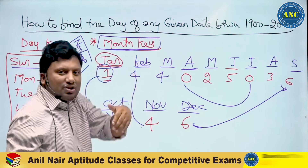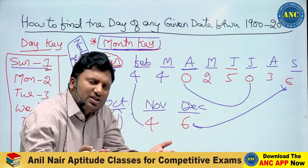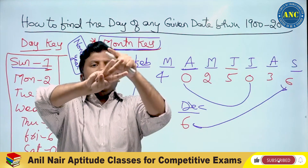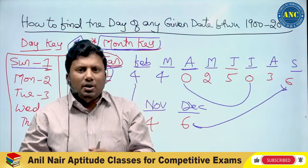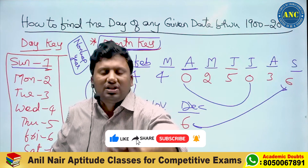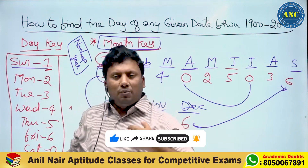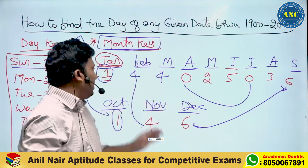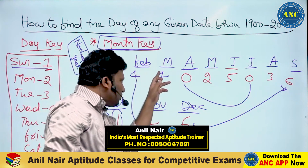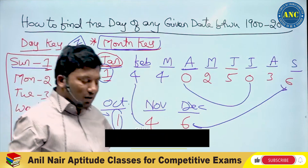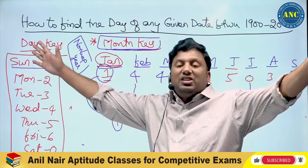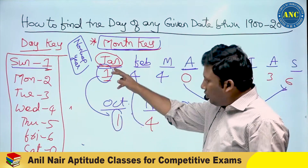February contains 28 days. 28 divided by 7 — remainder 0. That means if February 1st is a Sunday, then March 1st will also be a Sunday, because after 28 days (a multiple of 7) you land on the same day. So February and March share the same calendar start day in a non-leap year. Most students count days and divide by 7 — you don't need to do that.